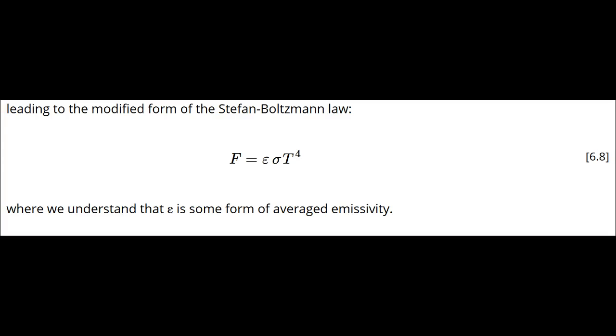With this form of the Stefan-Boltzmann law, we can compare the irradiances of two different bodies of matter at different temperatures or different emissivities.